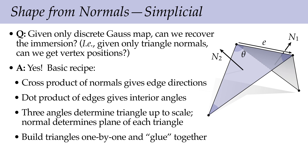As with other reconstruction theorems, there's a constant of integration — data not fully determined by the normals. In this case, we have to pick a global scale (the normals only determine shape, not size) and a translation. Otherwise the surface is uniquely determined. The next question is: does this procedure always work, or could something go wrong? Does it work for all surfaces whose normals were provided, or only some?